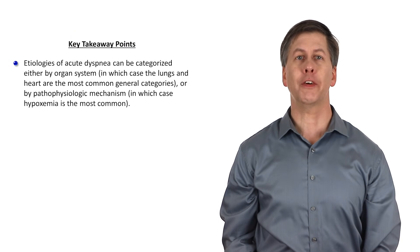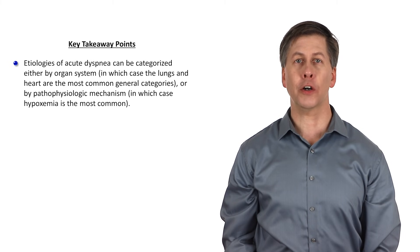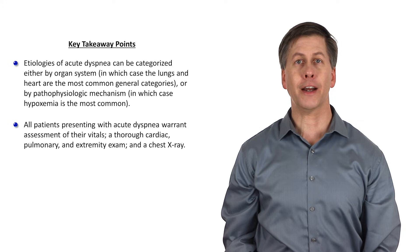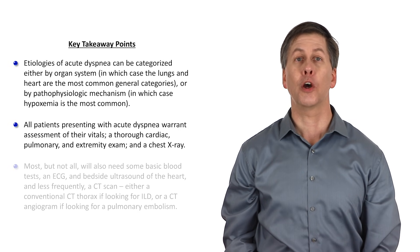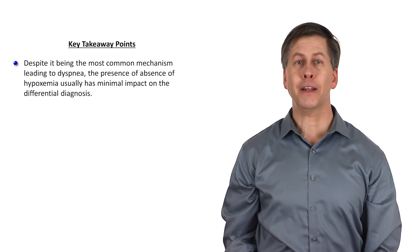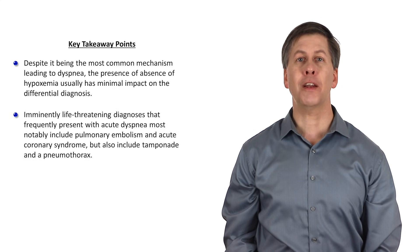So in summary, etiologies of acute dyspnea can be categorized either by organ system, in which case the lungs and heart are the most common general categories, or by pathophysiologic mechanism, in which case hypoxemia is the most common. All patients presenting with acute dyspnea warrant assessment of their vitals, a thorough cardiac, pulmonary, and extremity exam, and a chest x-ray. Most, but not all, will also need some basic blood tests, an ECG, and a bedside ultrasound of the heart if available. Less frequently required tests include a CT scan, either a conventional CT thorax if looking for ILD, or a CT angiogram if looking for a pulmonary embolism. Despite it being the most common mechanism leading to dyspnea, the presence or absence of hypoxemia usually has minimal impact on the differential diagnosis. And imminently life-threatening diagnoses that frequently present with acute dyspnea, most notably include PE and an acute MI, but also includes tamponade and a pneumothorax.